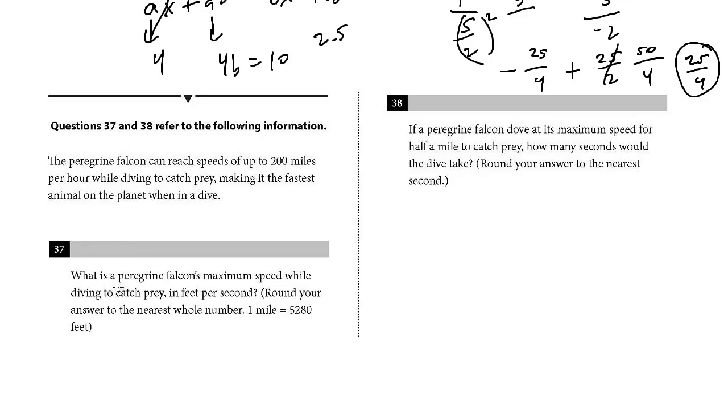Question 37. What is the peregrine falcon's maximum speed while diving to catch prey in feet per second? Round your answer to the nearest whole number. So feet per second. You really want to be careful with these unit conversion questions. Let's start, we know 200 miles per hour.